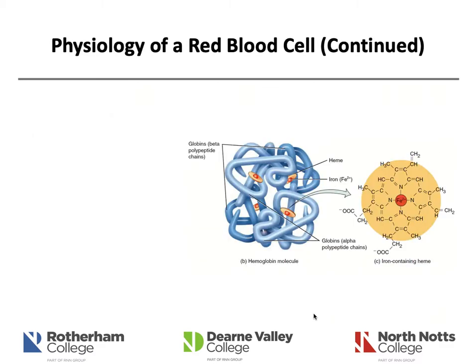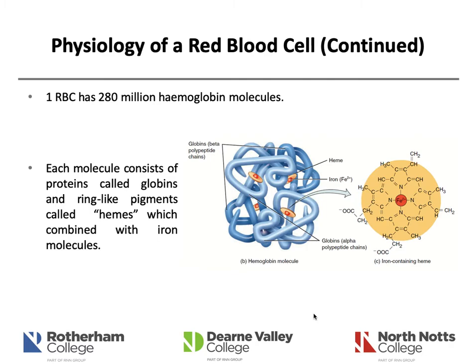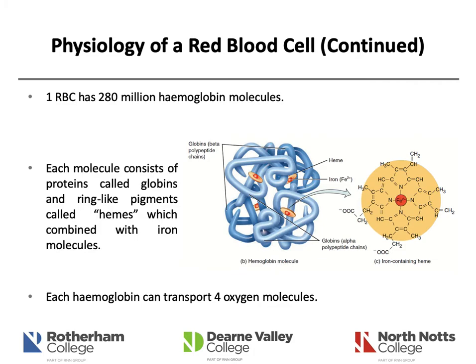This diagram shows a haemoglobin molecule — the key structure within a red blood cell giving it its specialised function of transporting oxygen. Within one red blood cell there are 280 million haemoglobin molecules. Each molecule consists of proteins called globins with ring-like pigments called hemes combined with an iron molecule. Each haemoglobin molecule can transport four oxygen molecules, meaning one red blood cell can transport over one billion oxygen molecules — very effective in its role.